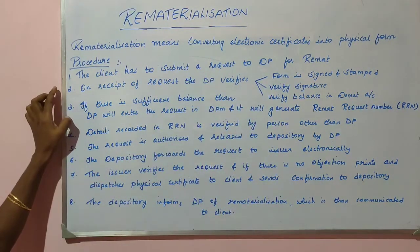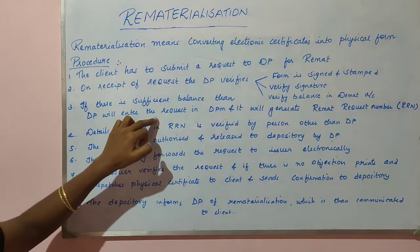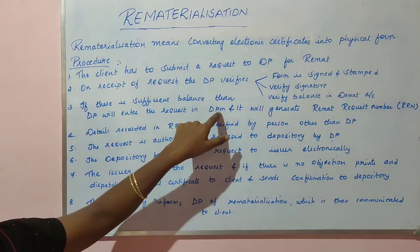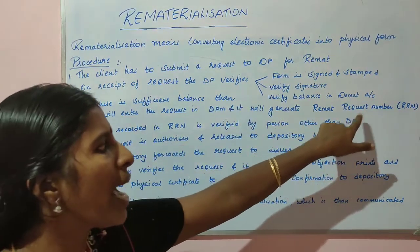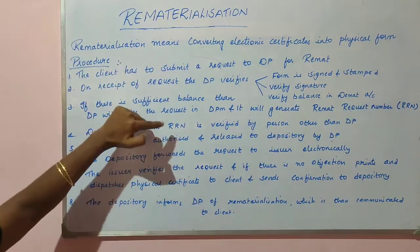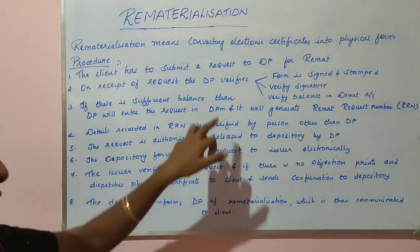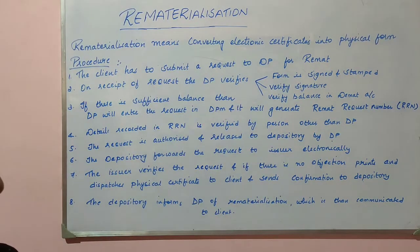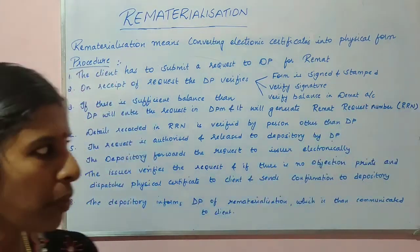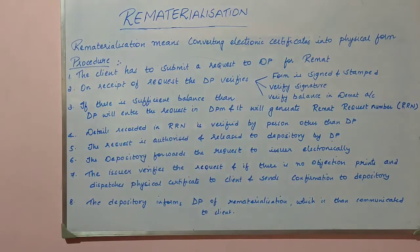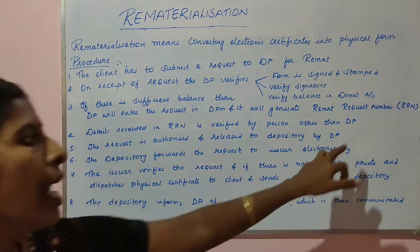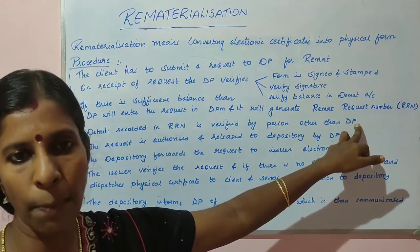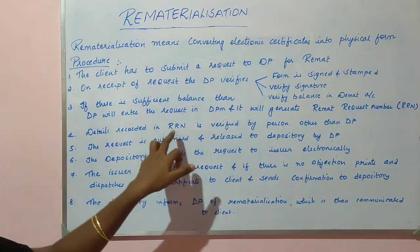Once verification is over and you have sufficient balance in your DMAT account, the depository participant enters the request in DPM — a software that generates a remat request number (RRN). This remat request number is then verified by another person, other than the depository participant, since they are dealing with your shares.